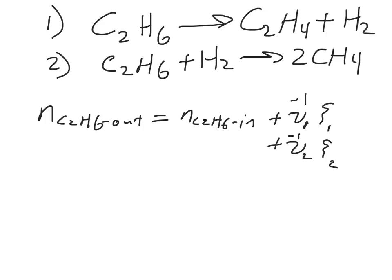And we can, of course, write other reactions. The number of molecules of C2H4 out is equal to the number of molecules of C2H4 in. And since it only comes into play in the first reaction, it's just simply adding in extent 1. There's no C2H4 in the second reaction, so there's no extent that comes into play for this reaction or for this equation right here.